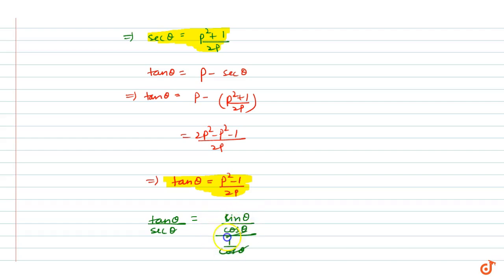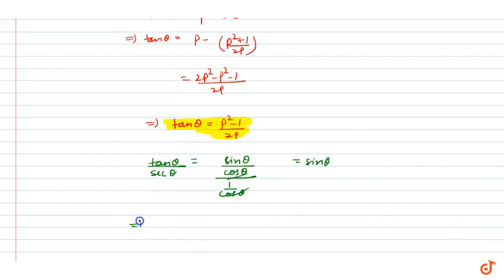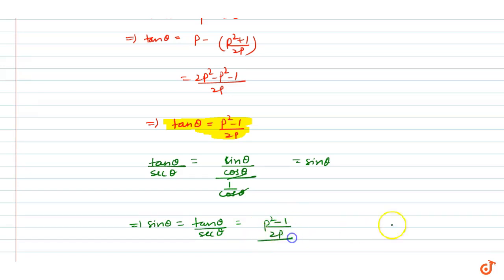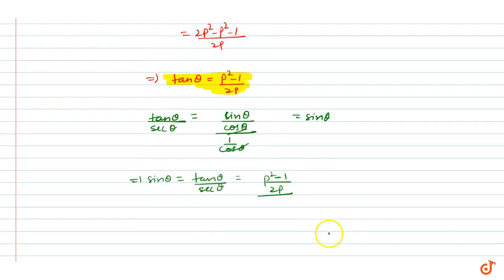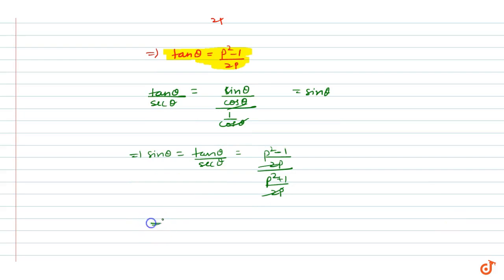Now, sin theta equals to tan theta upon sec theta. So sin theta equals to (P squared minus 1 upon 2P) divided by (P squared plus 1 upon 2P). The 2P cancels out, giving sin theta equals to P squared minus 1 upon P squared plus 1. So this is the answer.